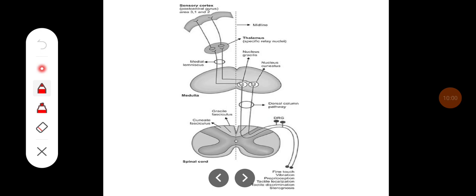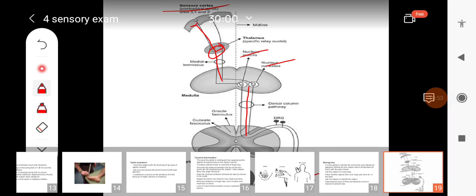The posterior column tracts carry sensations including fine touch, vibration, proprioception, tactile localization, tactile discrimination, and stereognosis. First-order neurons ascend in the same spinal cord up to the nucleus gracilis and nucleus cuneatus. In the medulla, second-order neuron fibers cross to the opposite side and relay in the contralateral thalamus. Third-order neurons relay in the sensory cortex — the parietal area, Brodmann areas 3, 1, and 2.